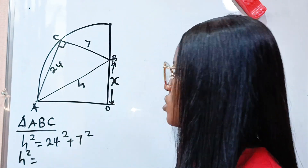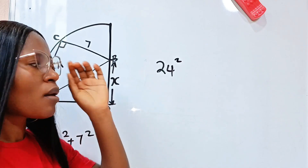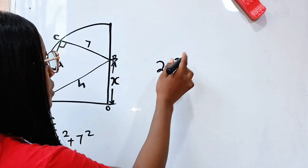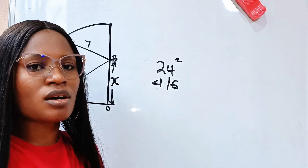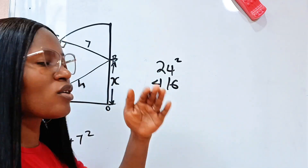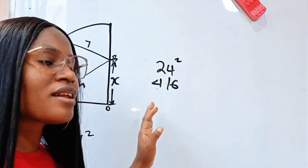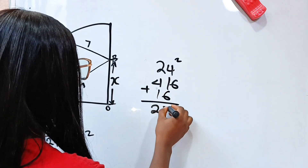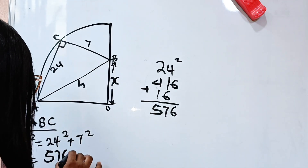H squared equals 24 squared plus 7 squared. Now, 24 squared is 576, and 7 squared is 49. Adding these gives H squared equals 625.